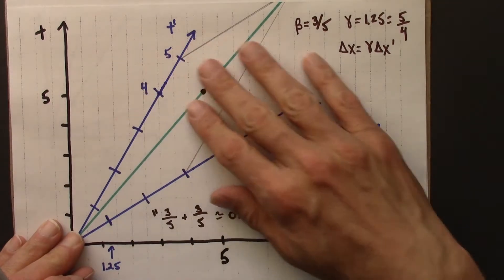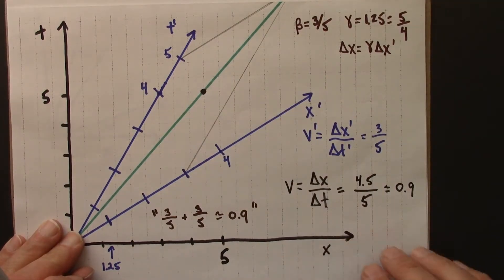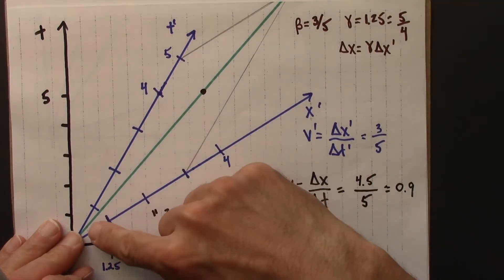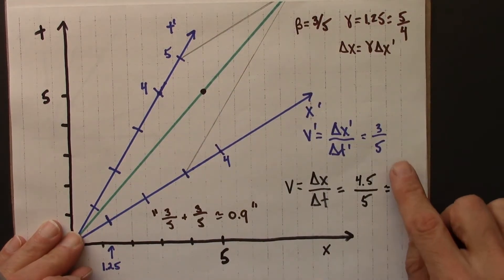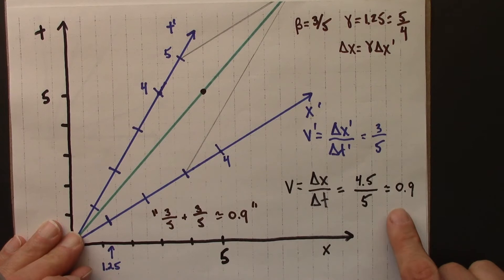In the previous video, we used a two observer diagram to express the velocity of an object with this world line in two different reference frames.